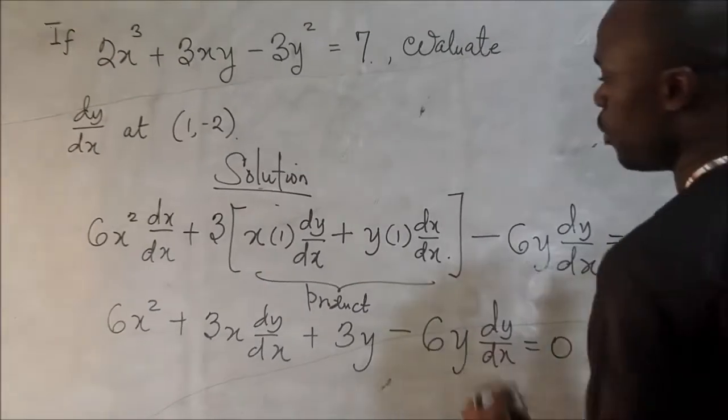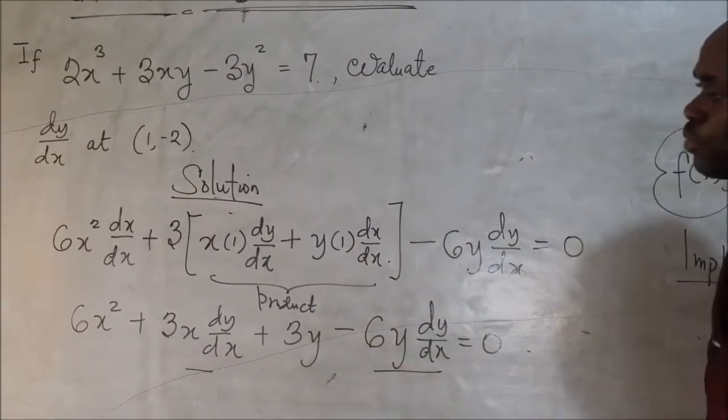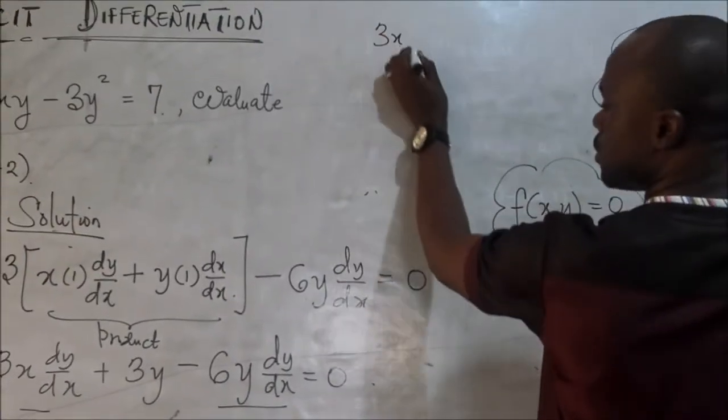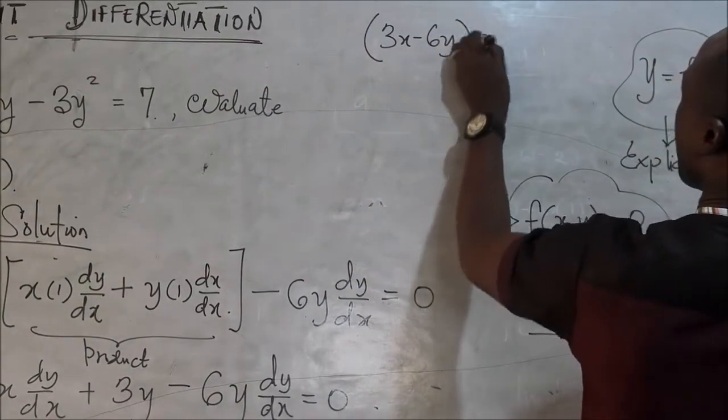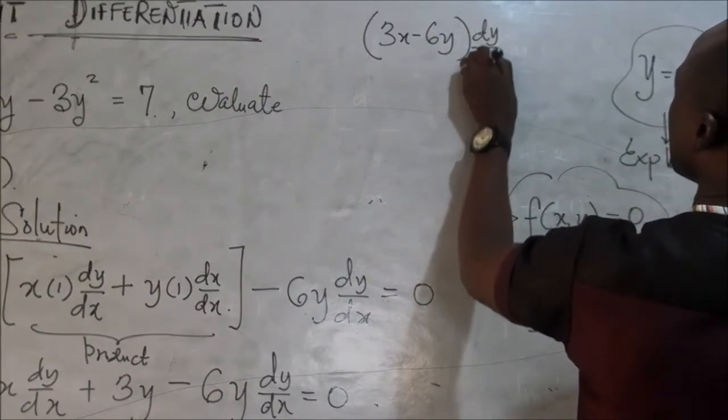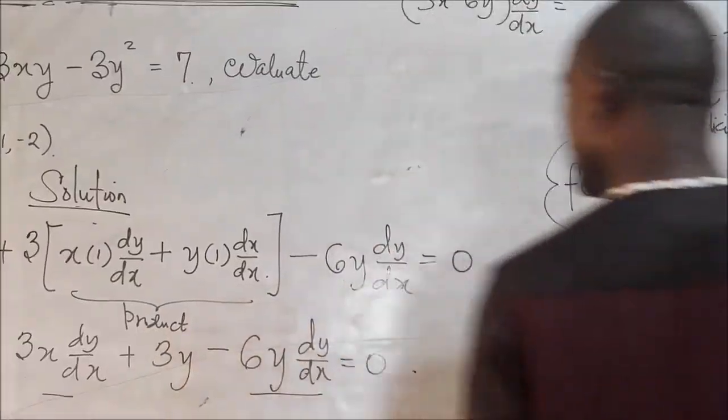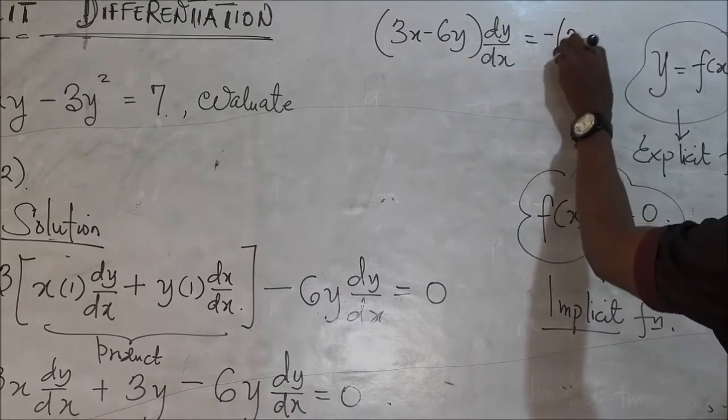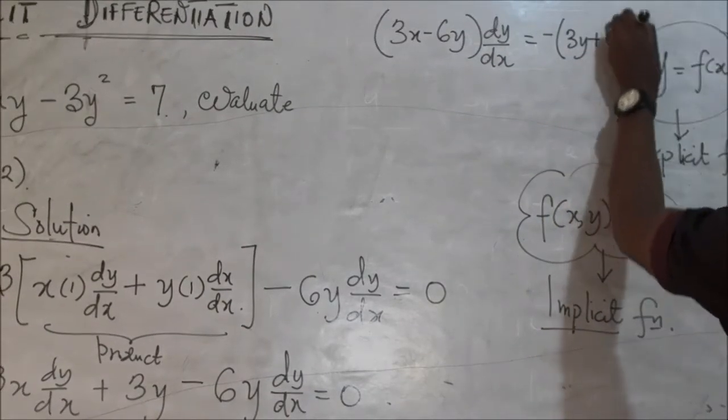So from there, all we need to do is collect items. These and these are items. So we can collect them and have 3x minus 6y dy dx. And on the other side, we can move this and this to the other side to have minus into 3y plus 6x squared.